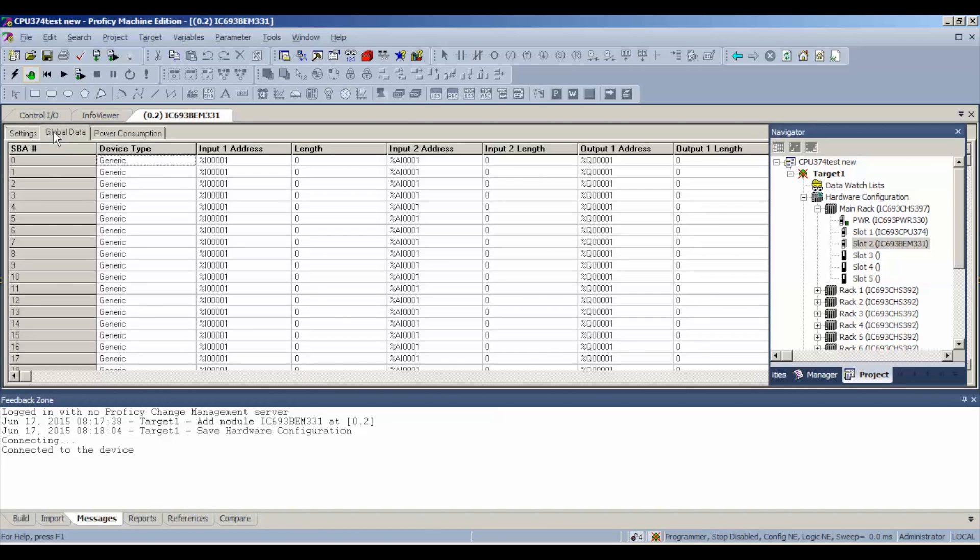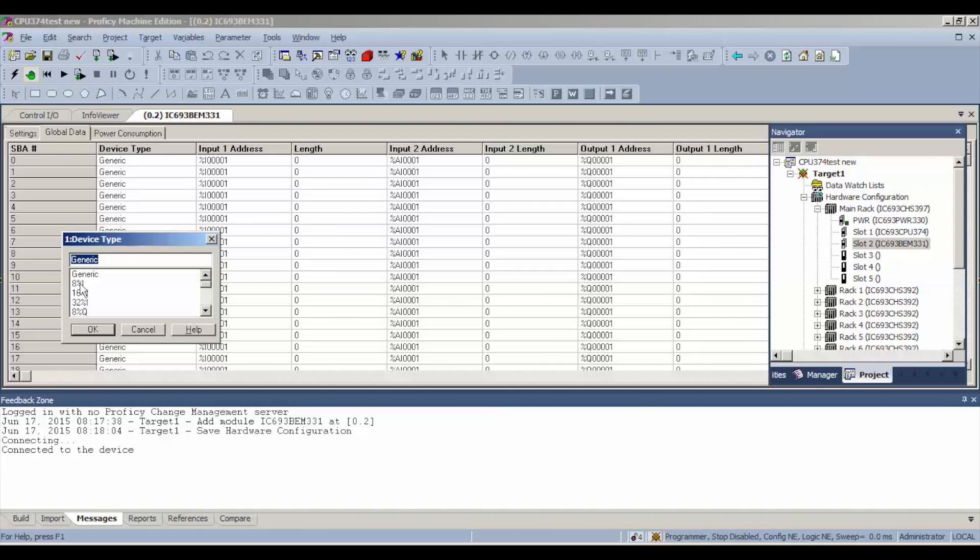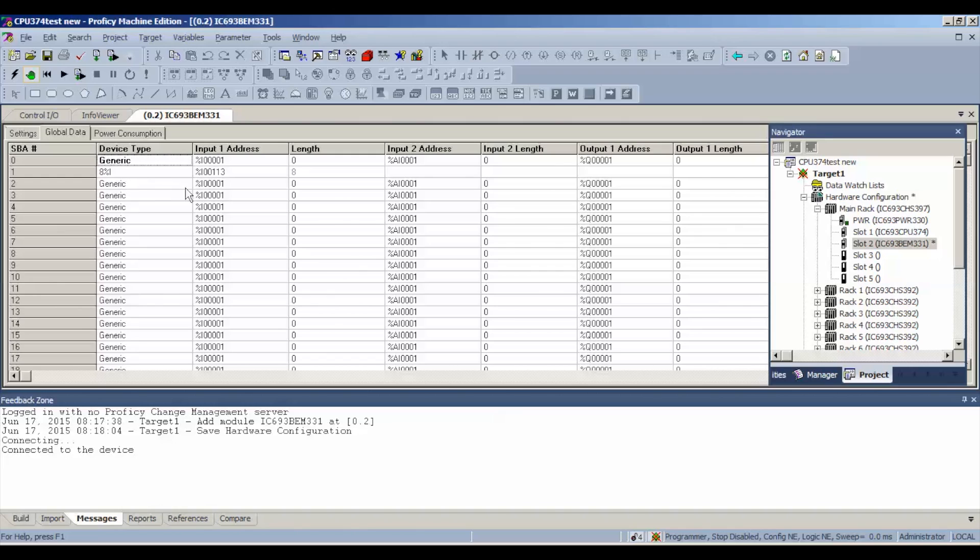As I mentioned before, our bus address number for this block is number one. You can double click on where it says generic where I've got my arrow or you can right click and hit data entry tool. It's eight discrete inputs, so eight percent I. It'll automatically establish an input starting address, which in my particular case is 113. Yours might be 0001. Just check to make sure you know where your address is so you can look at where the inputs are going to be coming in.